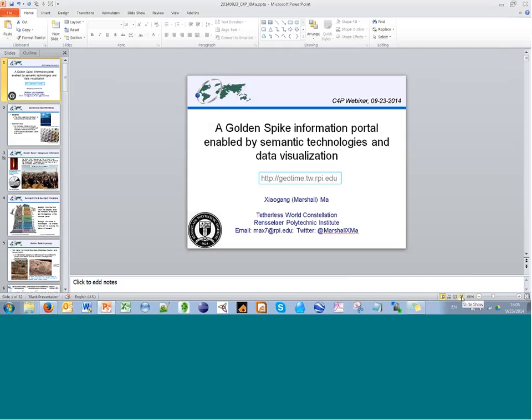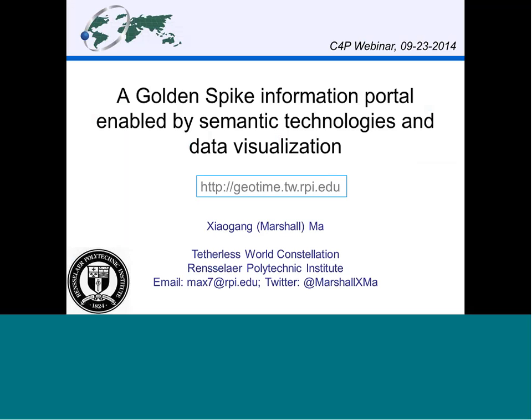Thank you, Megan. Hello, everyone. My name is Marshall Ma. I'm currently a research associate at Rensselaer Polytechnic Institute. I did my PhD in Earth System Science at the University of Trento in the Netherlands. Today I'm going to talk about part of my recent work on an information portal for the golden spikes.